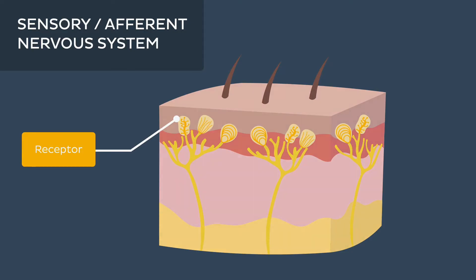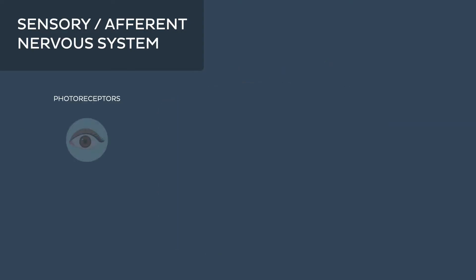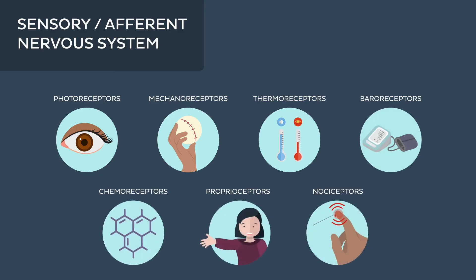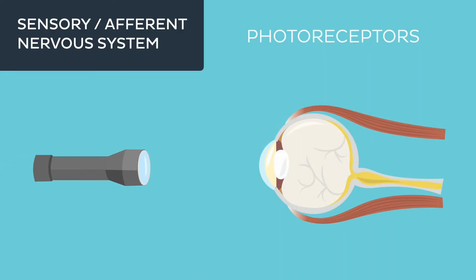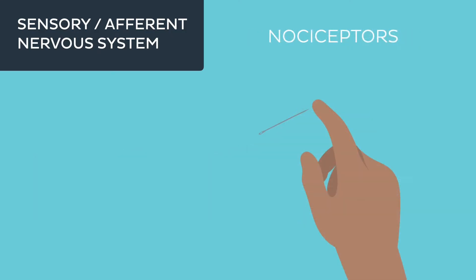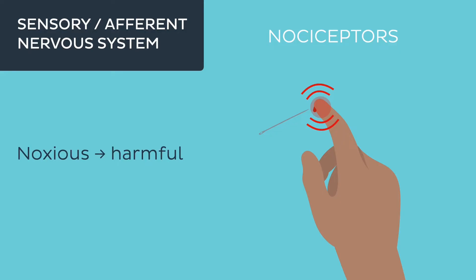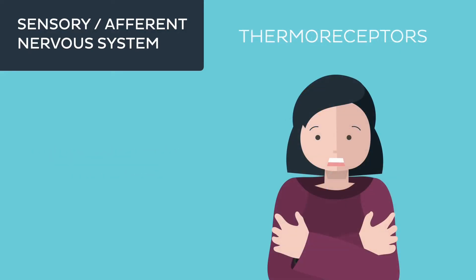There are various types of receptors, specific to different modalities or types of sensations. For instance, photoreceptors respond to light, while nociceptors detect stimuli which are potentially harmful or noxious and often result in pain. There are also thermoreceptors that respond to changes in temperature.